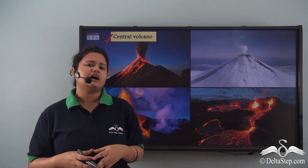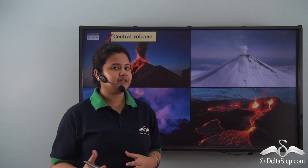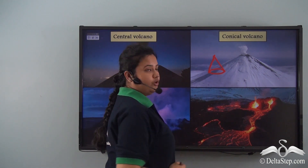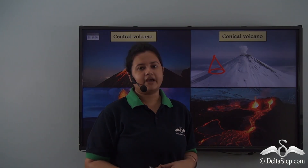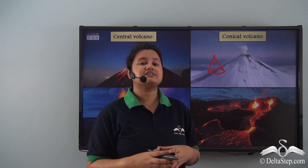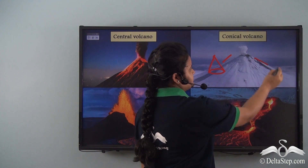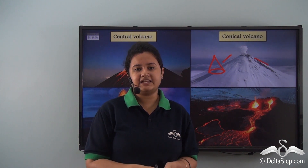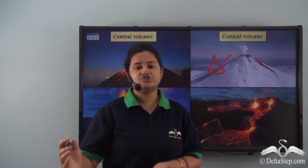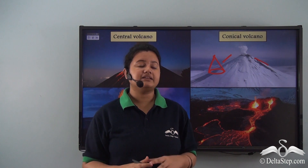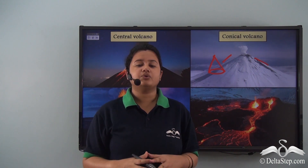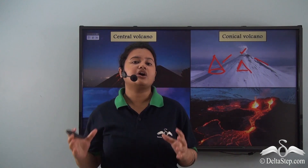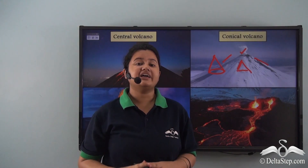Now look at the second picture. This volcano looks like a cone and is therefore called a conical volcano. A conical volcano has a cone shape with steep slopes. It is formed when lava is highly viscous and sticky, so it does not flow over a vast region but accumulates at a particular point, making a cone-shaped summit.